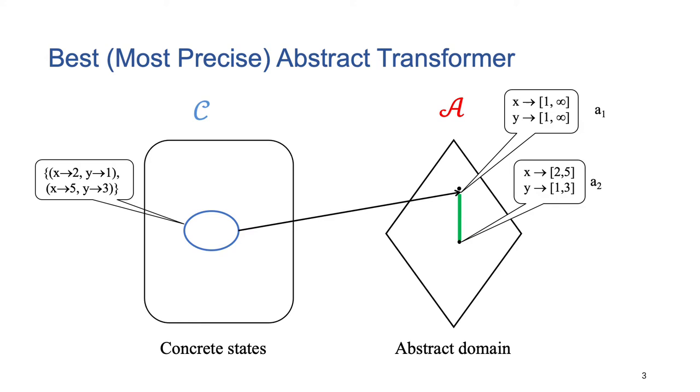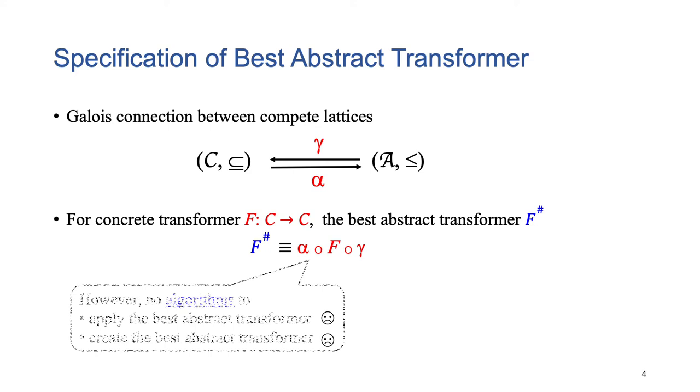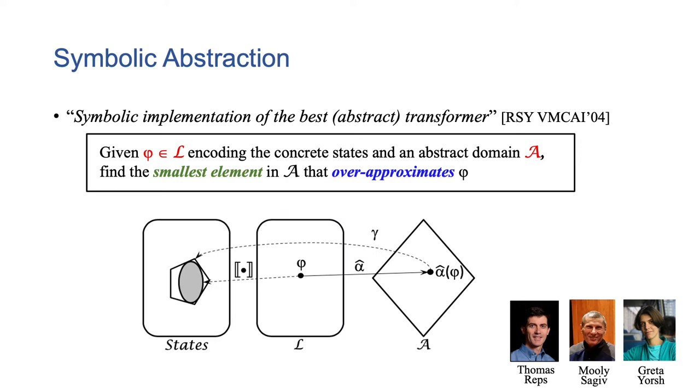Intuitively, it is the best or most precise one. How can we compute such best abstraction? The abstract interpretation theory provides us a declarative specification of the best transfer functions, but the definition is non-constructive. Usually, we don't have an algorithm for applying the best transformers or for creating a representation of the best transfer functions.